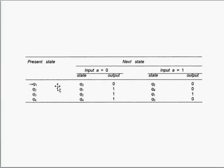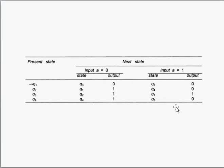As we know, in the case of a Mealy machine the output depends on which state you are going to. In the first case, if we apply 0 over q1 it will go to q3 and the output will be 0. If we apply 1 over q1 it will go to q2 and the output will be 0. In the case of q2, if we apply 0 the output will be 1 and it will go to q1. If we apply 1 over q2 it will come to q4 and the output will be 0. Now it is clear this is a Mealy machine, and we are going to learn how to convert it to a Moore machine.